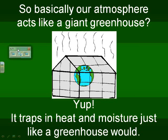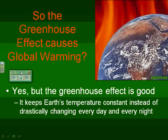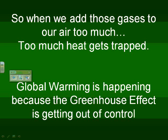We're a big giant greenhouse and we're stuck inside. But as that heat and moisture just keeps getting trapped, global warming starts to occur. If the greenhouse effect is good, then what's really the problem? The greenhouse effect is escalating — more and more greenhouse gases are building up in our atmosphere, and those gases are able to hold onto more heat. As they hold more heat, the overall temperature increases.